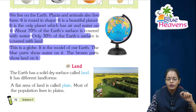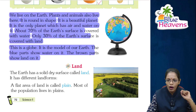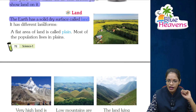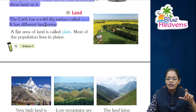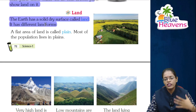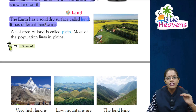The Earth has a solid dry surface called land. It has different landforms — meaning different physical characteristics and textures.